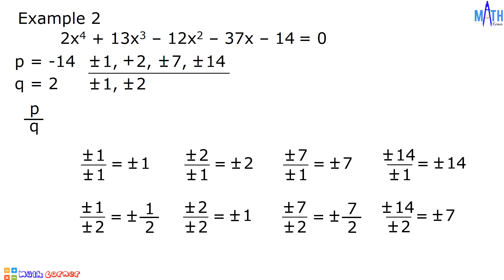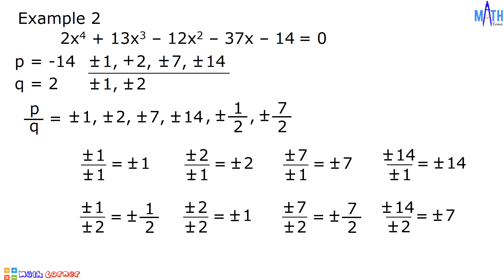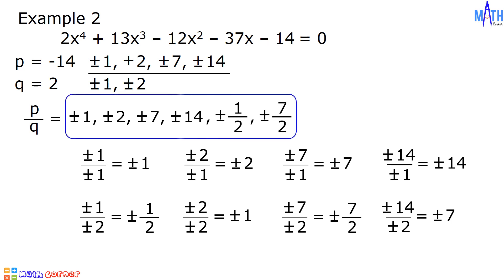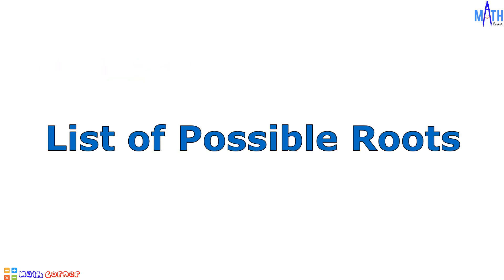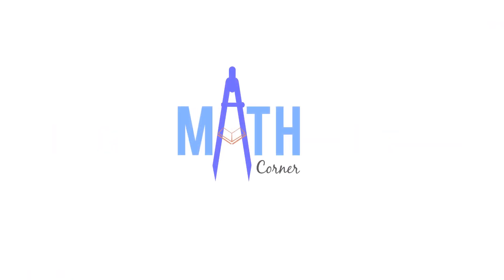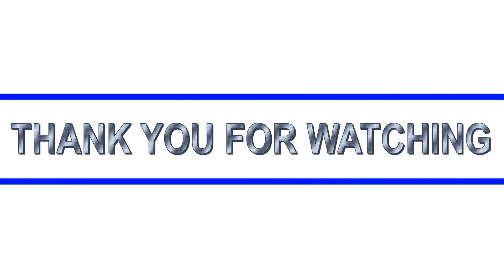Therefore, p over q equals positive and negative 1, positive and negative 2, positive and negative 7, positive and negative 14, positive and negative 1 over 2, and positive and negative 7 over 2. This is the list of possible roots of this polynomial equation. That is how to find the list of possible roots of polynomial equations. That's all for this video. Thank you for watching.